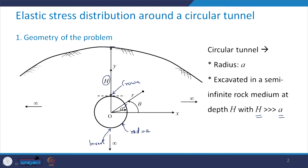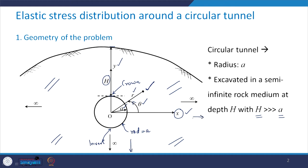The topmost point of the tunnel is called the crown and the bottommost point is called the invert. Any point in this semi-infinite space is defined by a polar coordinate system (r, θ), where θ is taken in an anti-clockwise direction from the horizontal x-axis. The vertical axis is the y-axis. The rock has infinite extent in all directions, and h is much larger than the radius of the circular tunnel.